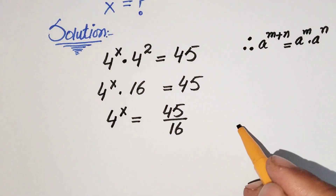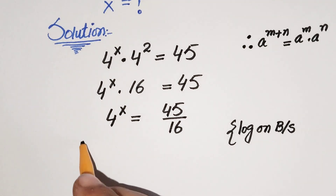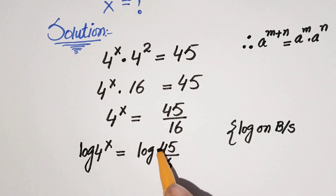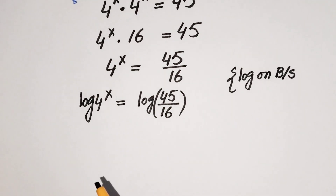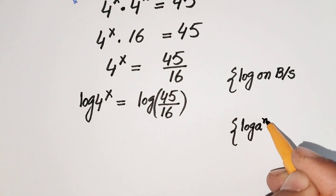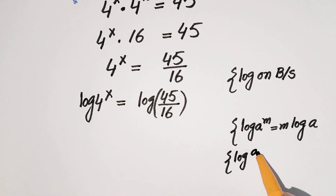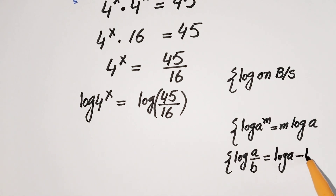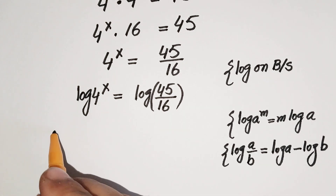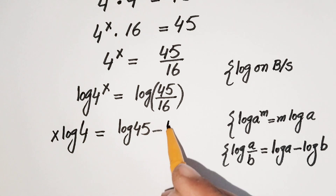Now taking log on both sides, we get log of 4 to the power x is equal to log of 45 over 16. Our next step is to use logarithm laws: the power law which is log a to the power m equals m log a, and on the right hand side the quotient law which is log a over b equals log a minus log b. Using these two laws, we get x log 4 is equal to log 45 minus log 16.